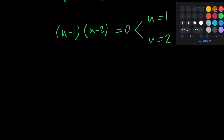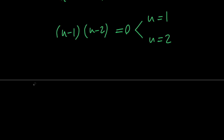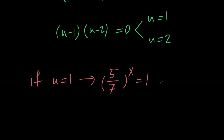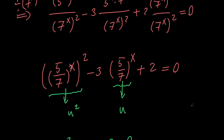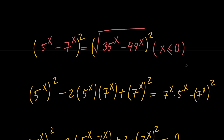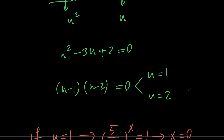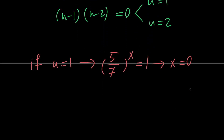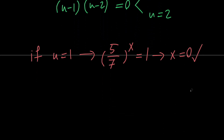If u equals 1, we have (5/7) to the x equals 1, which means x equals 0. Remember that x should be less than or equal to 0, and 0 is less than or equal to 0. Therefore, x equals 0 is a valid solution.